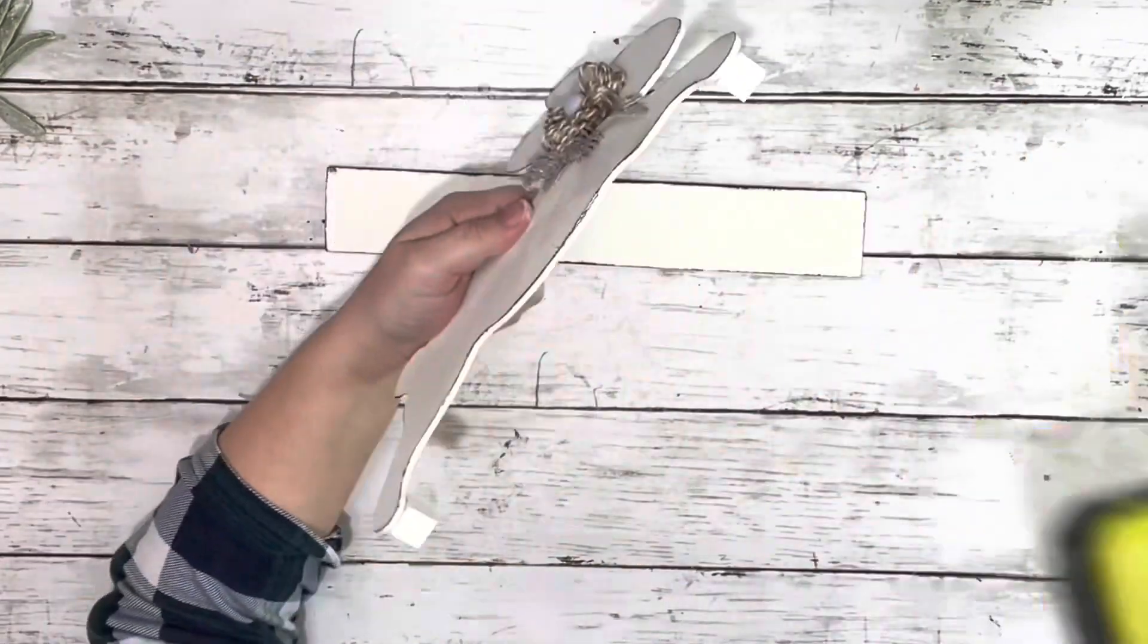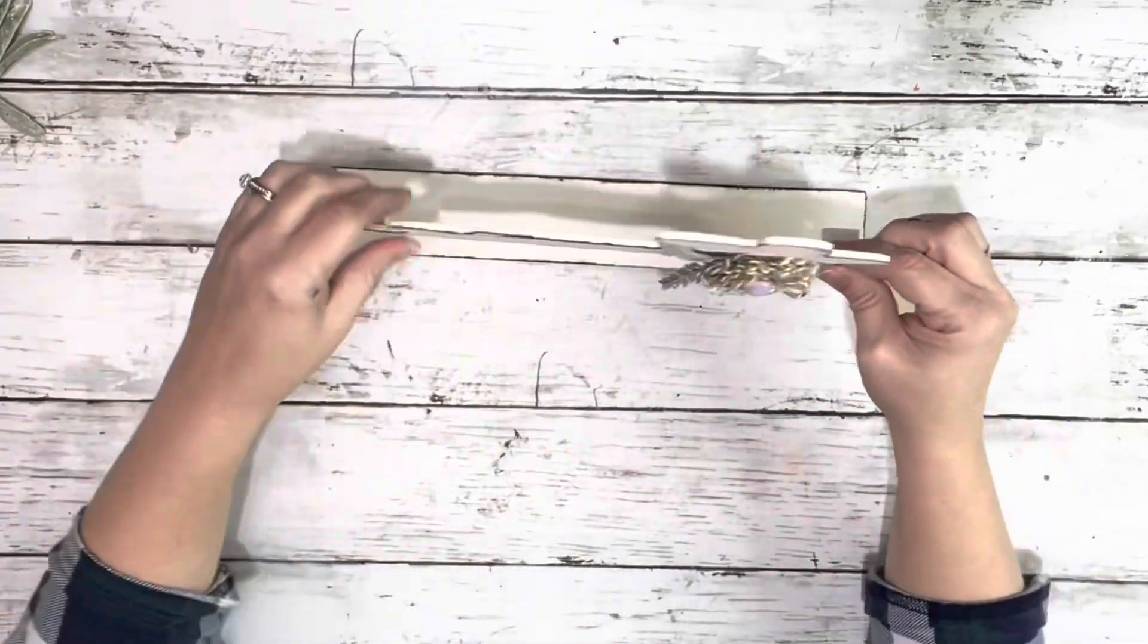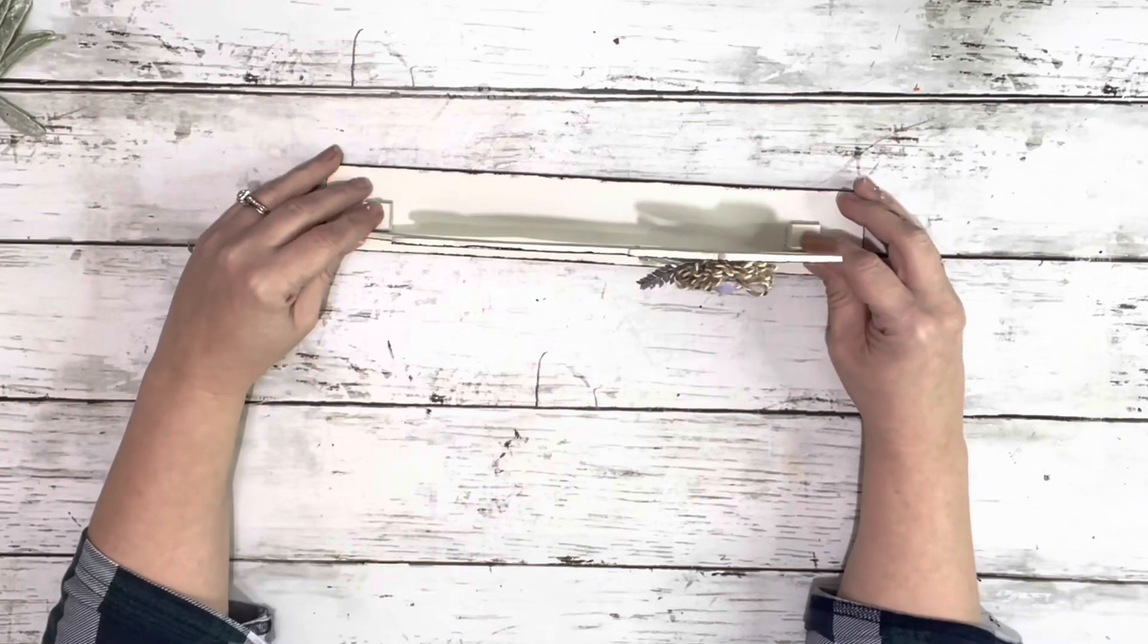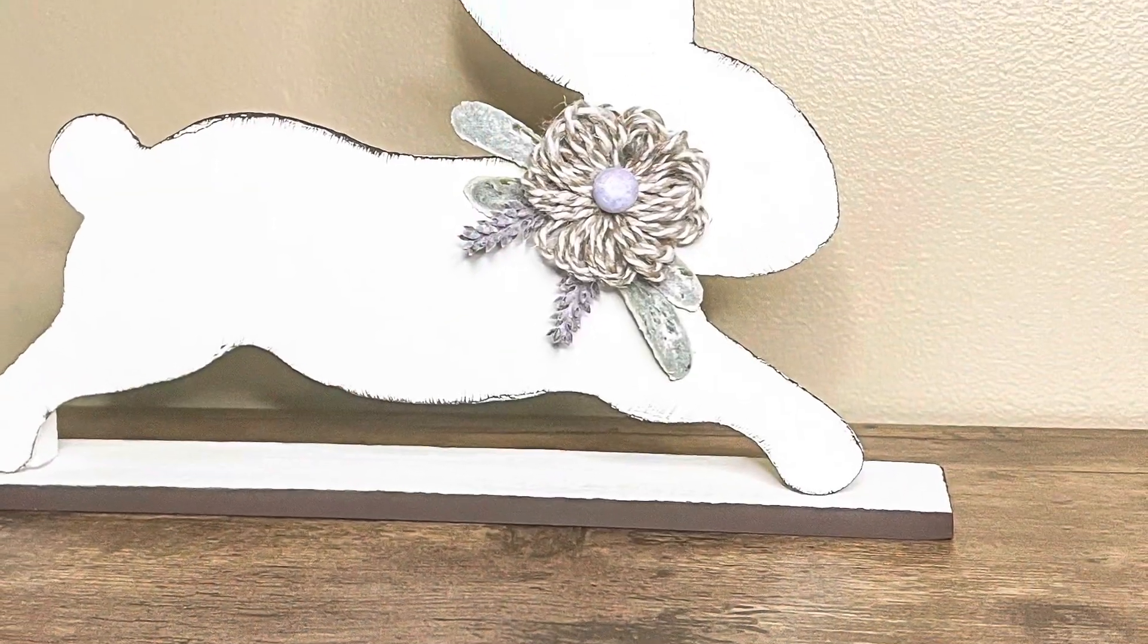The last thing I did was hot glue those pieces right down to that board I had painted. Now I wanted it plain and simple. You can totally add greenery or moss or flowers or eggs or carrots - that would be really cute too. But here it is all finished. Thank you guys so much for watching.